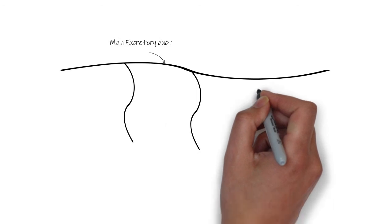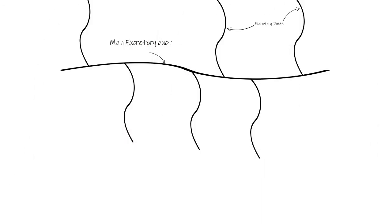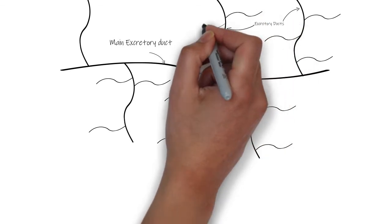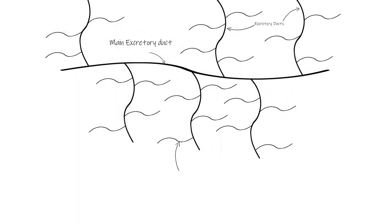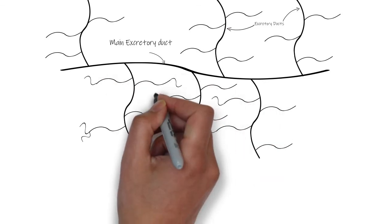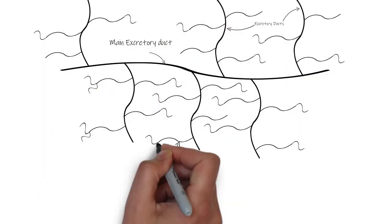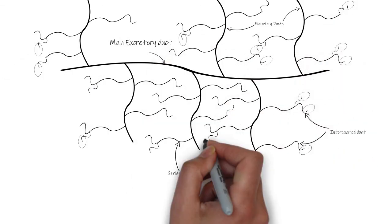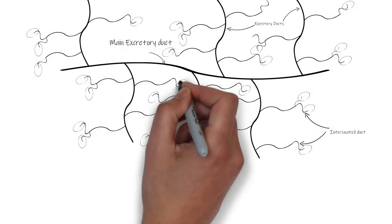To recap: the organization of salivary glands starts from the oral cavity as the main excretory duct, which progressively divides into smaller interlobular excretory ducts that eventually enter the salivary lobules. Inside the lobules, the striated ducts play a major role in the modification of primary saliva. Connecting the striated ducts to the end pieces are the intercalated ducts, which branch and join the end piece where their lumen becomes continuous with that of the secretory end pieces.